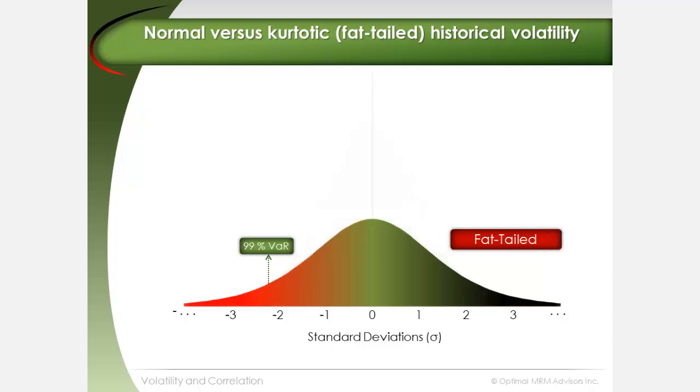Risk factor changes do not occur in a normal way in the real world. This implies that a standard 2.33 multiplier of volatility for 99% VaR would very likely understate risk exposure, meaning that a higher multiplier than the standard 2.33 is required.